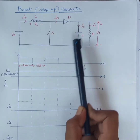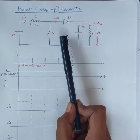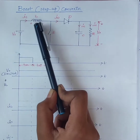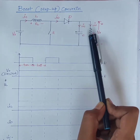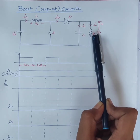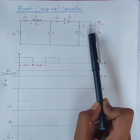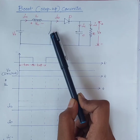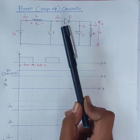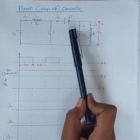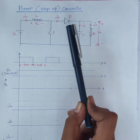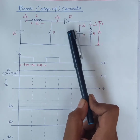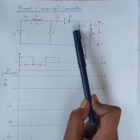The circuit diagram of boost converter consists of input source Vs, inductor, switch, diode, capacitor and resistor. Both resistor and capacitor are connected in parallel. The boost converter can operate in two modes: continuous conduction mode and discontinuous conduction mode. Today, we will discuss only continuous conduction mode.